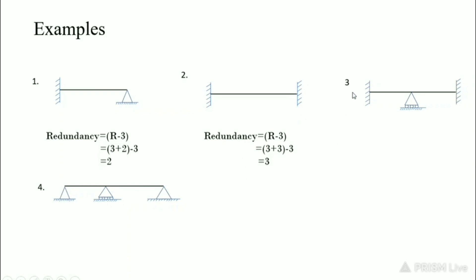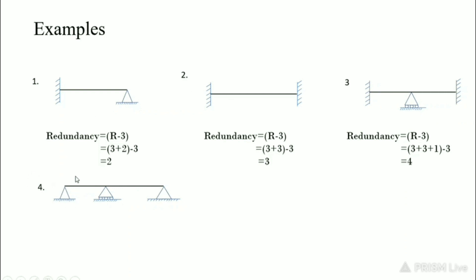Third example: a beam with both sides fixed and a roller support in the center. Redundancy equals r minus 3. There are 3 reactions for each fixed support and 1 for the roller support, giving r equals 7, so the redundancy equals 4 for this member.